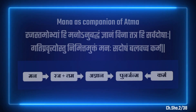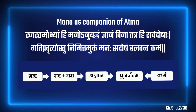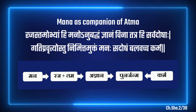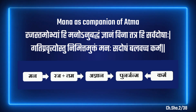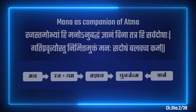Man as companion of Atma: Man is associated with Raj and Tam, while all those are caused by lack of Samyak Gyan. The cause of movement and inclination of Atma from one body to another is Sadosh Man and Balvan Purva Karma.